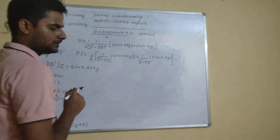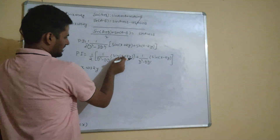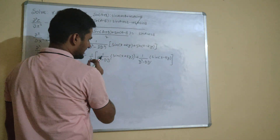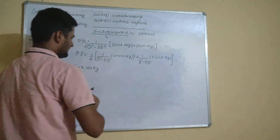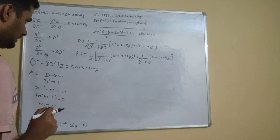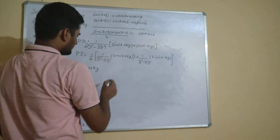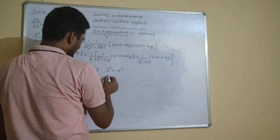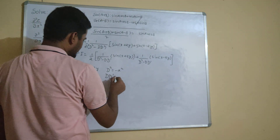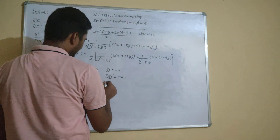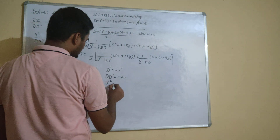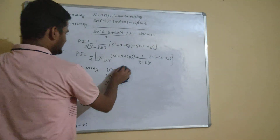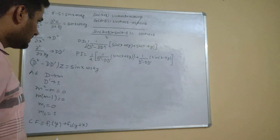For the form sin(ax + by), we use the substitution: replace D² by -a², D·D̄ by -ab, and D̄² by -b². In the first term sin(x+2y), a=1 and b=2. In the second term sin(x-2y), a=1 and b=-2. We apply these substitutions to each term separately.